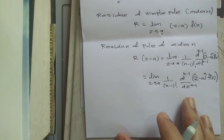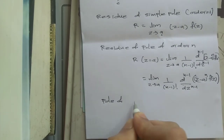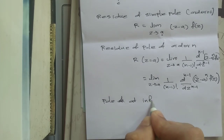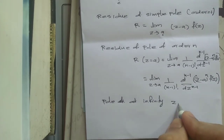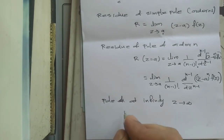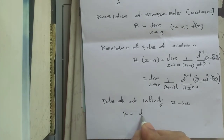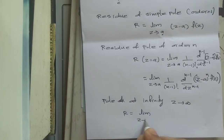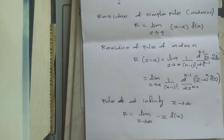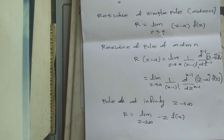Now let's talk about the pole at infinity, where z tends to infinity and infinity becomes your singular point. In that case, the residue is the limit as z tends to infinity of [−z · f(z)].